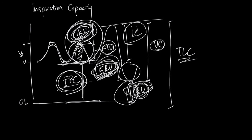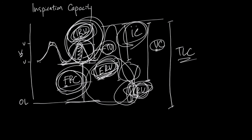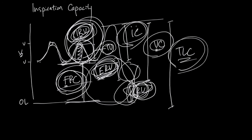Finally, if you add the inspiration capacity — all the air that can go in — and the functional residual capacity — all the air that can be taken out — you get the total lung capacity. Another way to think about it: you can tap into this much air as your vital capacity, and if you add the residual volume that you cannot tap into, you still get the total lung capacity.